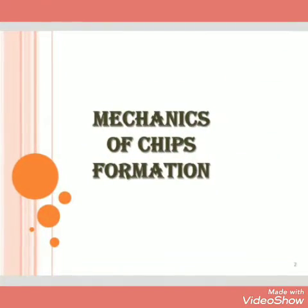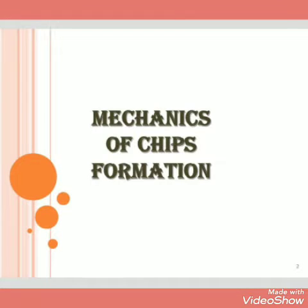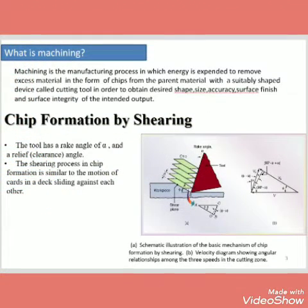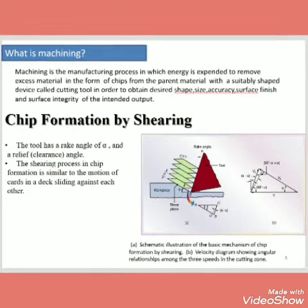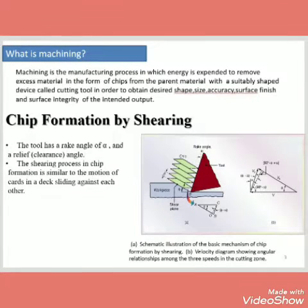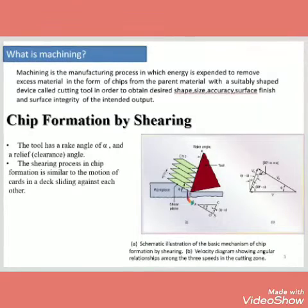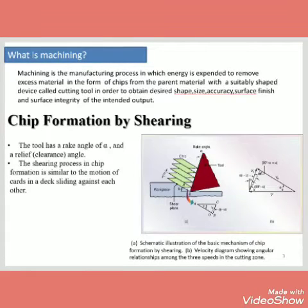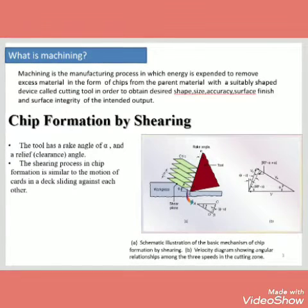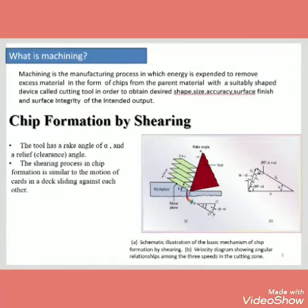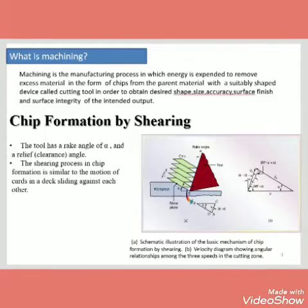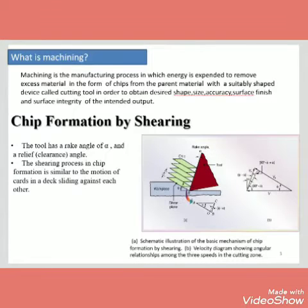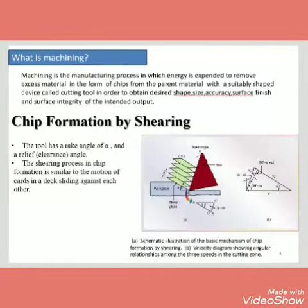Now coming to the first slide, that is the mechanics of chip formation. What is machining? Machining is the manufacturing process in which energy is expanded to remove excess material in the form of chips from the parent material with a suitably shaped device called a cutting tool, in order to obtain the desired shape, size, and accuracy. It may be chip formation by shearing; the tool has a rake angle alpha and a relief or clearance angle. The shearing process in chip formation is similar to the motion of cards in a deck sliding against each other.